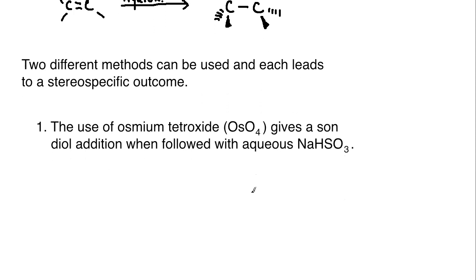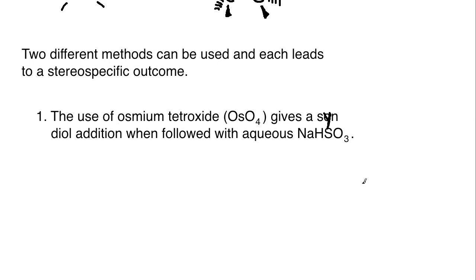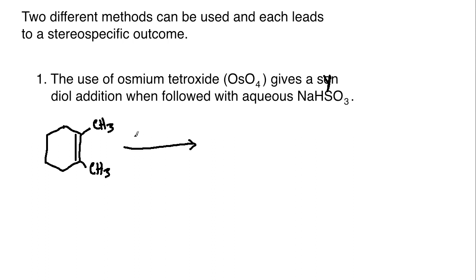The first method is the use of osmium tetroxide, OsO4, and that is going to give a syn diol addition when followed with aqueous sodium bisulfite. Osmium tetroxide can be used for syn addition — syn means on the same face or the same side of the double bond. Let's look at an example using a cyclohexene with methyl substituents so we can be very clear about the stereochemical outcomes. Osmium tetroxide is typically used in a solvent like pyridine, an aromatic base solvent that helps to assist in this reaction.